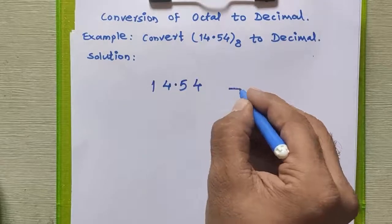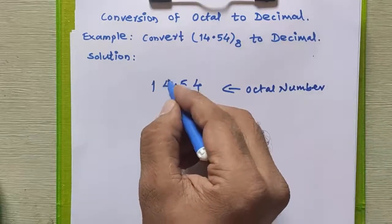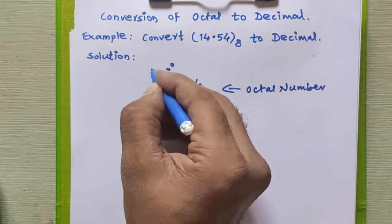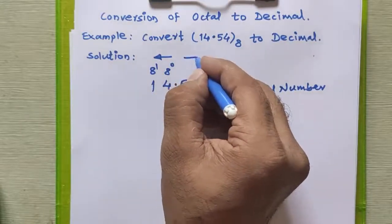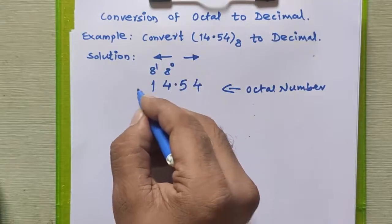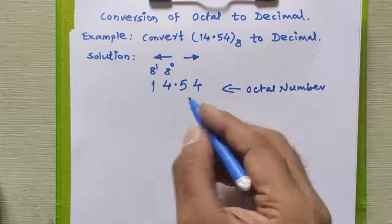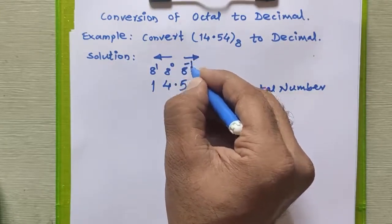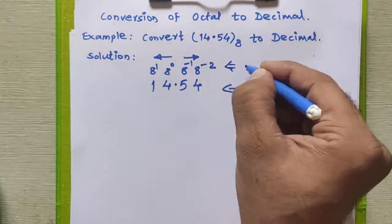Here is the original octal number given to us. The positional power for 4 (the units digit) is 8 raised to 0, and for 1 (the next digit left) is 8 raised to 1. Towards the left-hand side the powers are increasing; towards the right-hand side the powers are decreasing. For the fractional part, the power for 5 (first digit after decimal point) is 8 raised to minus 1, and for 4 it is 8 raised to minus 2.